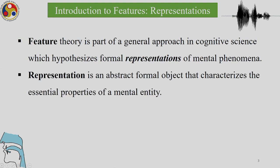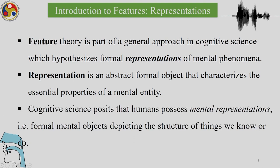A representation is considered to be an abstract object that characterizes the properties of a mental entity. Cognitive science posits that humans possess mental representations — formal mental objects depicting the structure of things we know or do. One of the things we know as humans is knowledge of language, and that knowledge is sought to be represented in terms of features, which formalize the components of sounds.